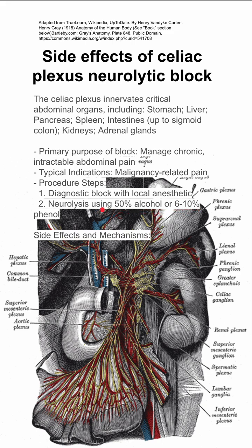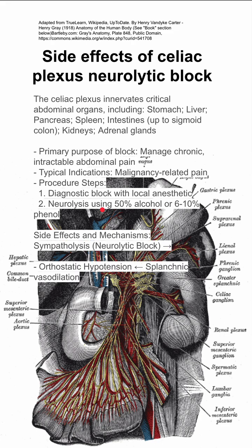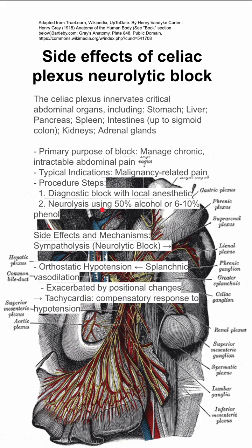There are some notable side effects for the celiac plexus neurolytic block. You have sympatholysis with the neurolytic block, which can lead to orthostatic hypotension caused by splanchnic vasodilation. This can be exacerbated by positional changes and can lead to tachycardia, which would be a compensatory response to the hypotension.